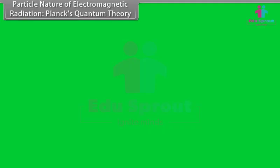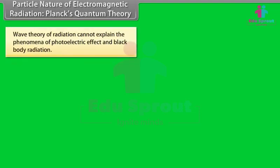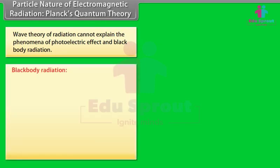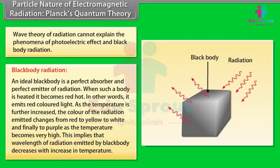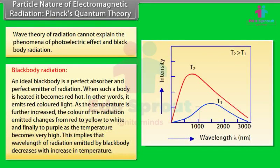Particle nature of electromagnetic radiation — Planck's Quantum Theory: Wave theory cannot explain phenomena like the photoelectric effect and black body radiation. An ideal black body is a perfect absorber and perfect emitter of radiation. When heated, it emits red light; as temperature increases, the color changes from red to yellow to white to purple. This implies that the wavelength of radiation emitted decreases with increasing temperature. At a given temperature, intensity increases with decreasing wavelength, reaches a maximum, then decreases further.